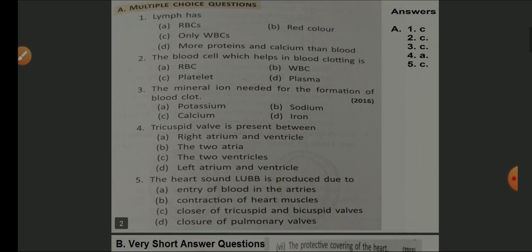Lymph has — four options are given: RBC, red color only, WBCs, more protein and calcium than blood. The answer is 'only WBCs.' The blood cells which help in blood clotting — options are RBC, WBC, platelet, and plasma. The answer is platelet, option C.